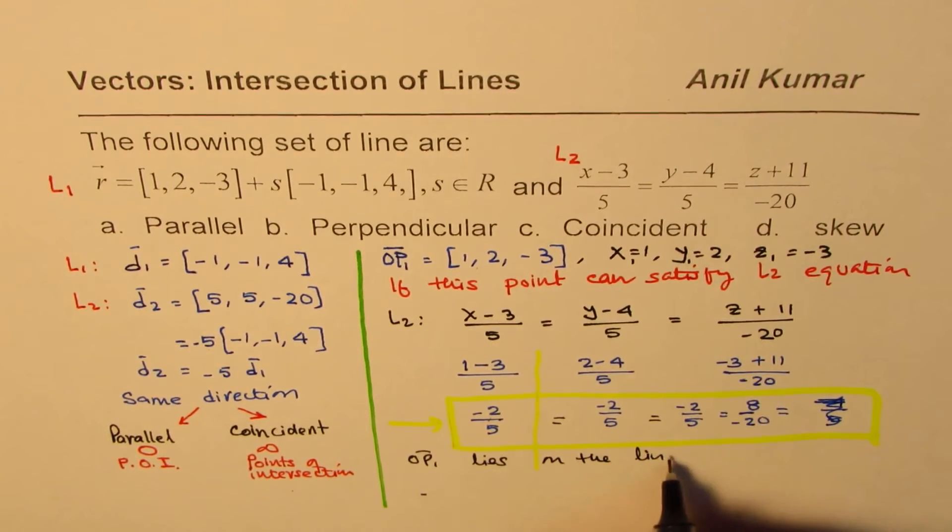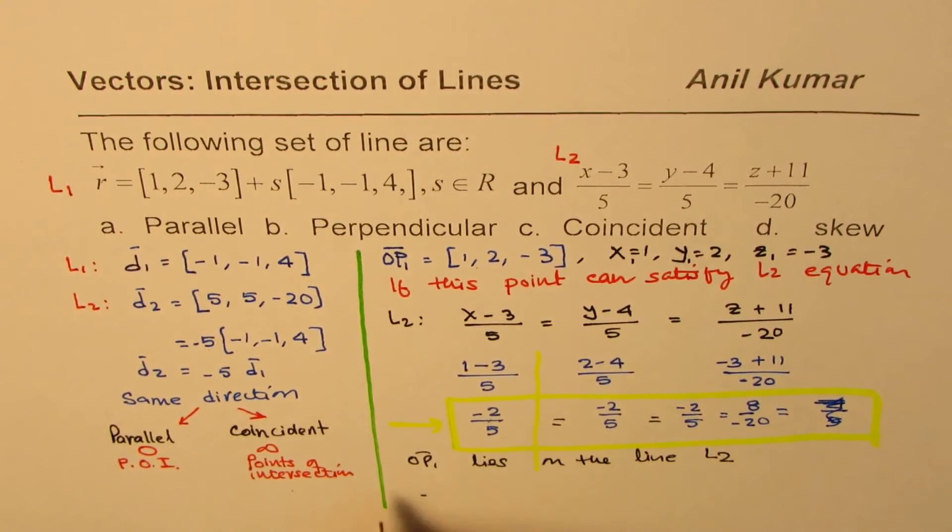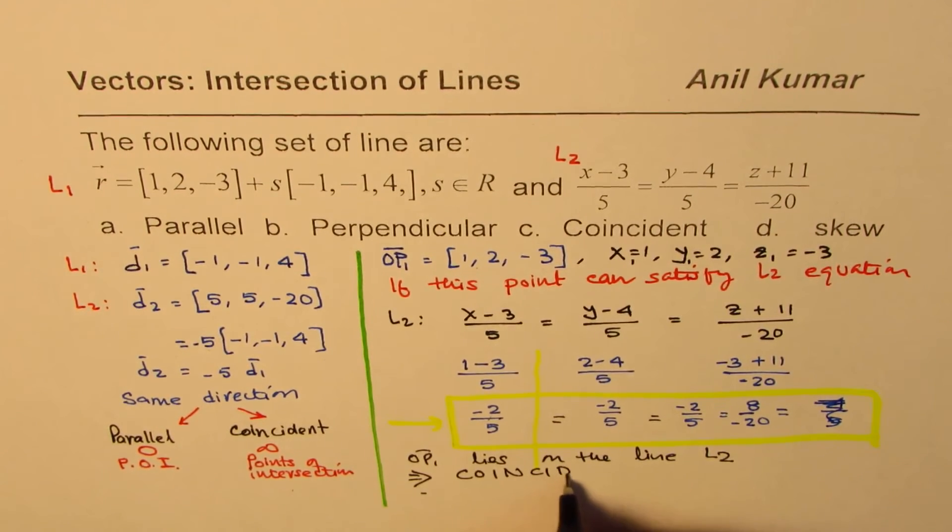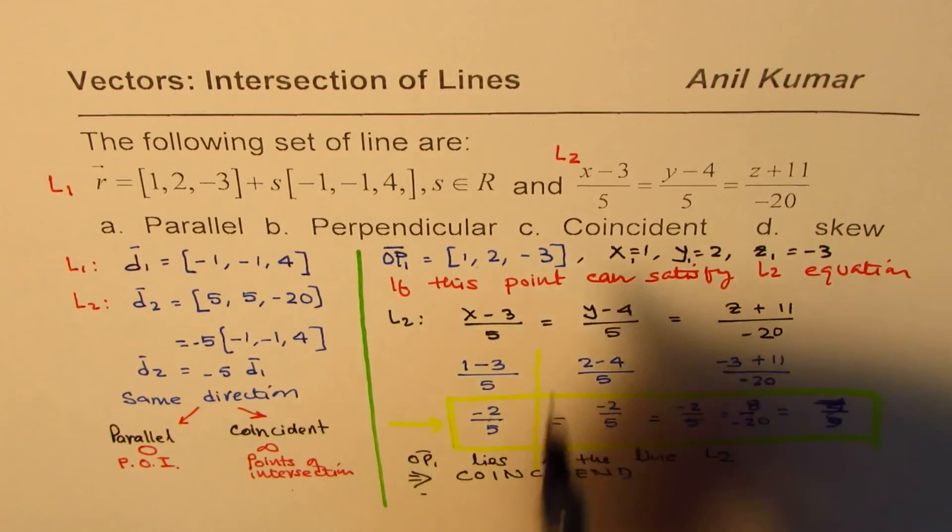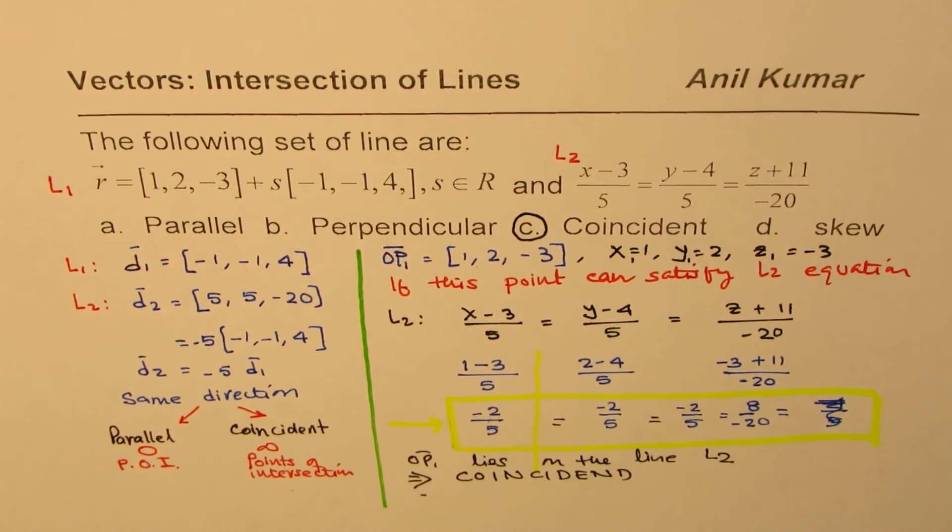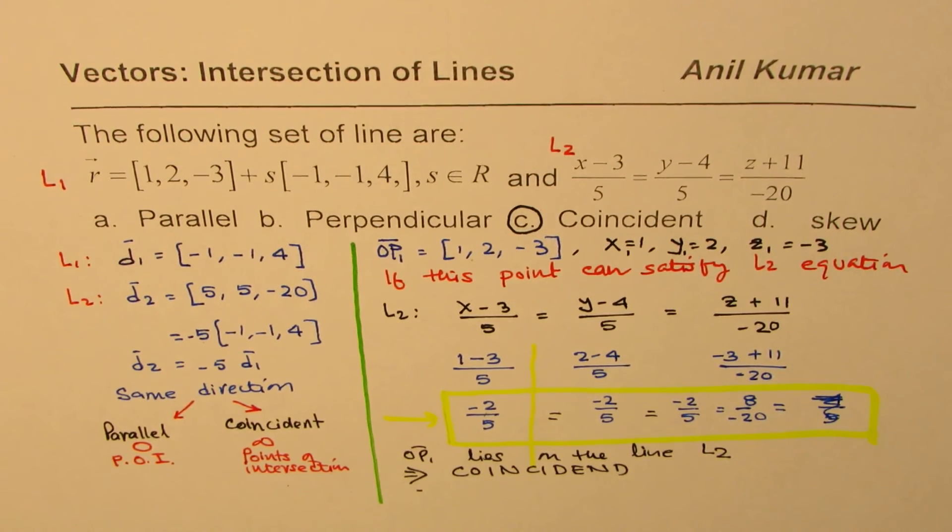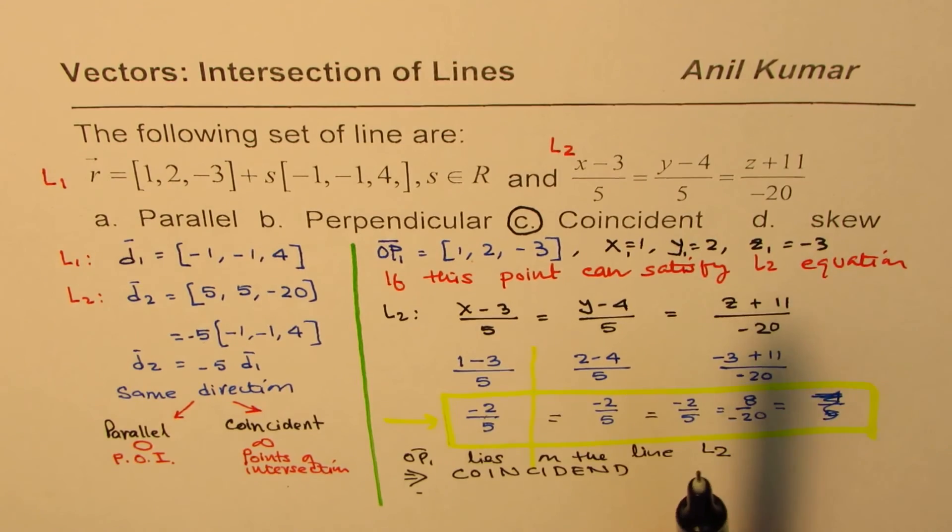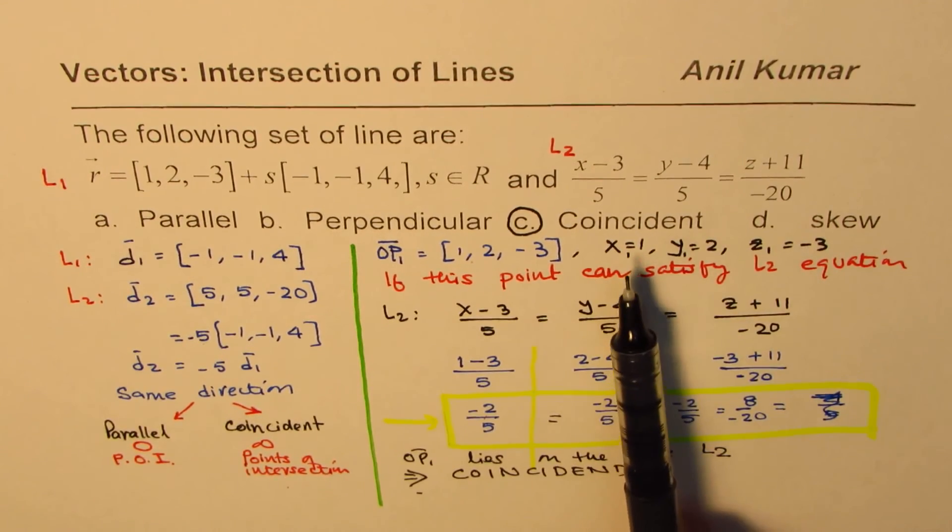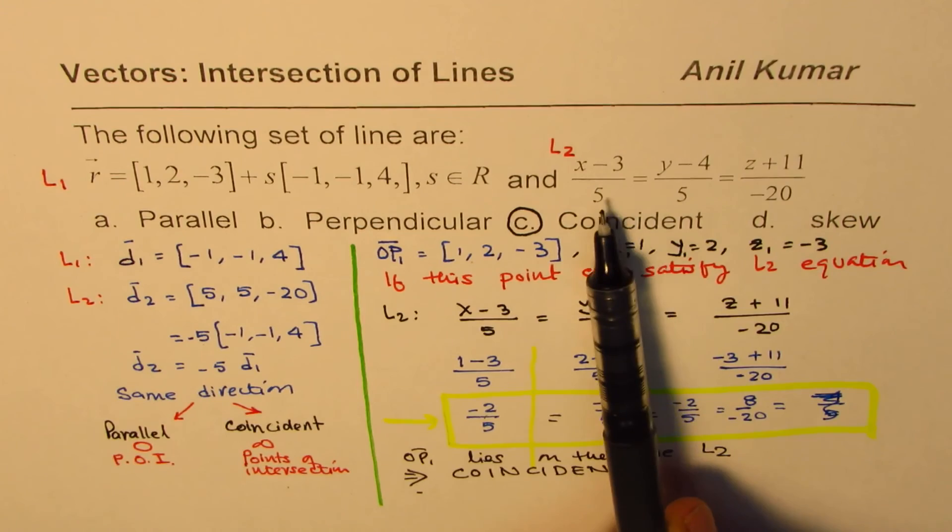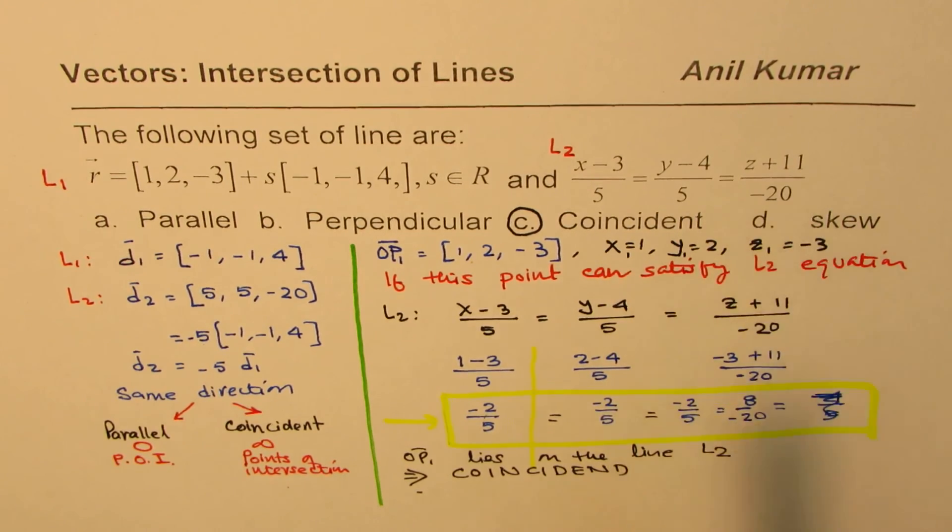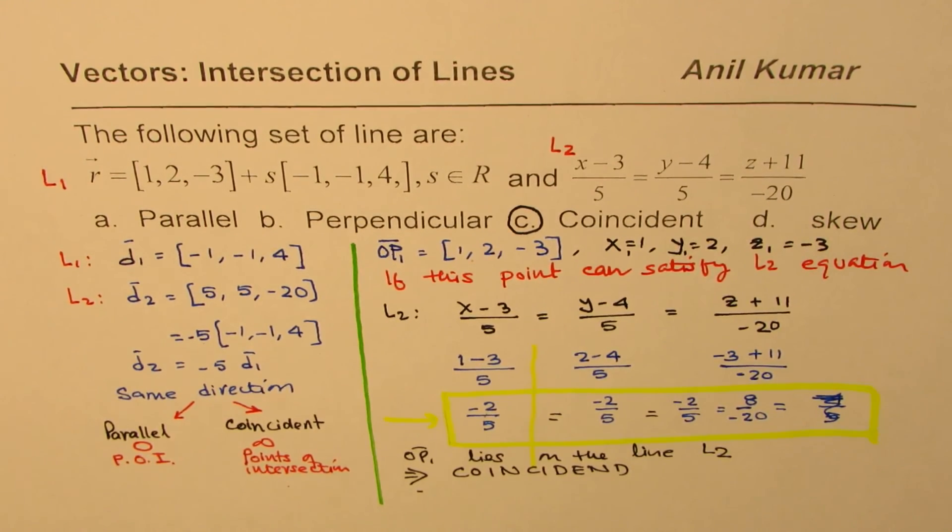Therefore, we conclude that the lines are coincident, so option C is the correct option. That is how we show this point lies on both lines. You could also do it the other way once you substitute, but this is simpler. I hope that helps. Thank you and all the best.